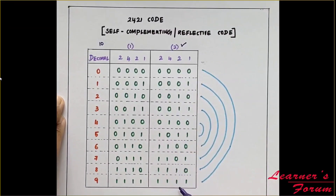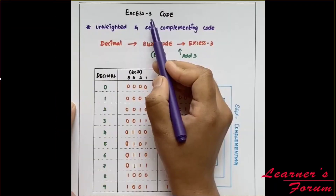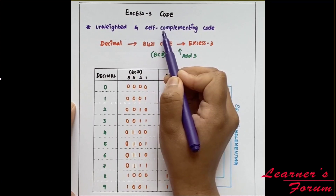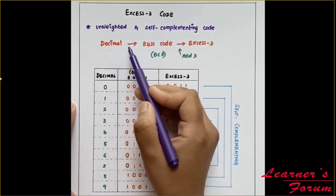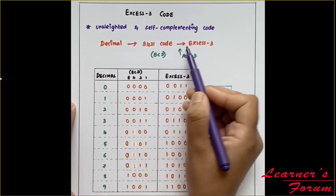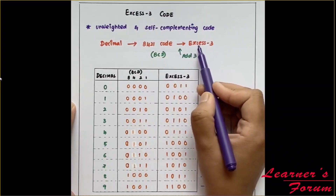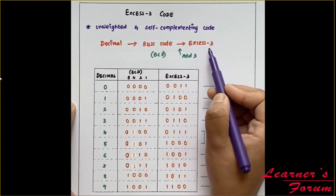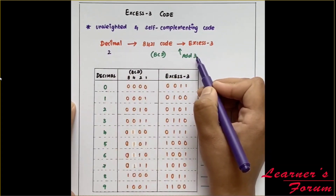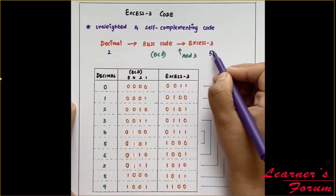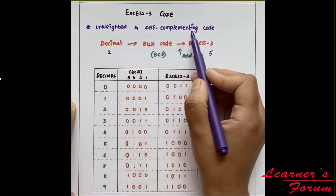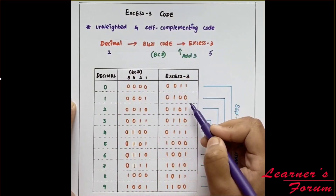Now let us see the next code, which is XS3 code — an unweighted and self-complementing code. Unweighted means there are no positional weights. The procedure is: first write the decimal value in 8421 technique, which is BCD code, and then add 3 to get the XS3 representation. That is why the name is XS3 — excess of 3, meaning adding 3 to the existing BCD value. For example, if the decimal value is 2, then 2 plus 3 equals 5, which is the XS3 representation.